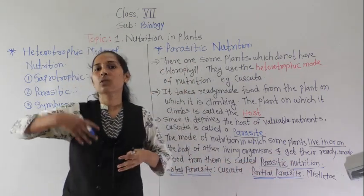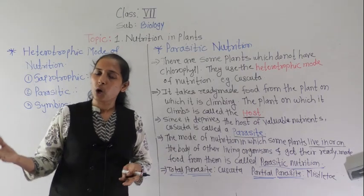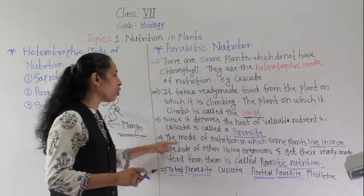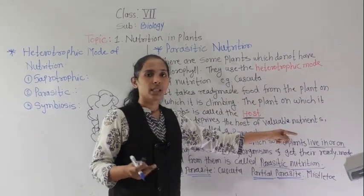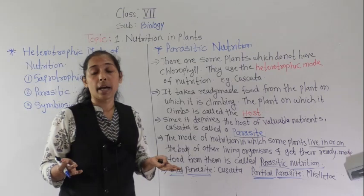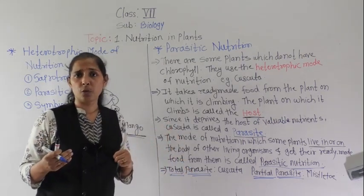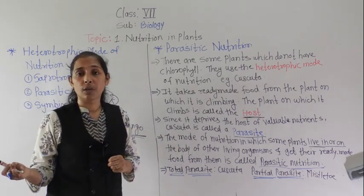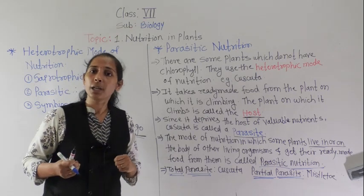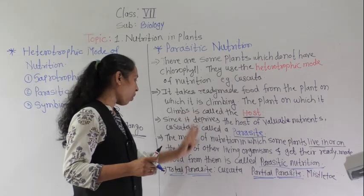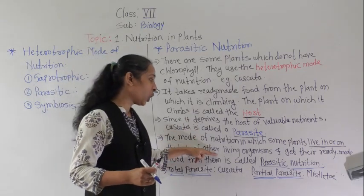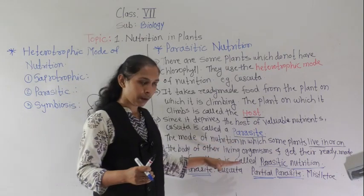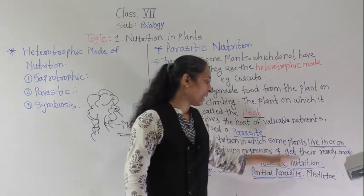Parasitic means those who are totally dependent on others for food — they can't do anything for their food. Some organisms live inside others, like flatworms and tapeworms living in our body. Some feed on our body, for example the leech feeds on our body. So, some live in or on the body of other living organisms to get their ready-made food, and that type of nutrition is called parasitic nutrition.